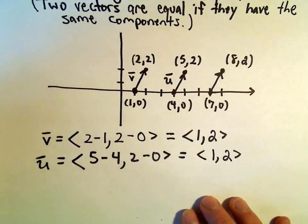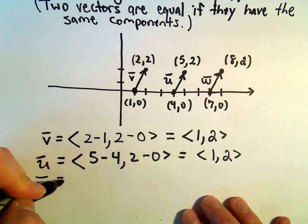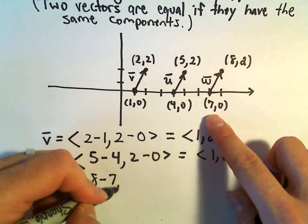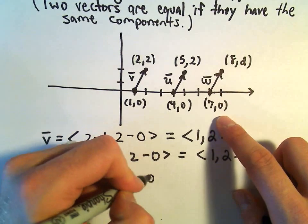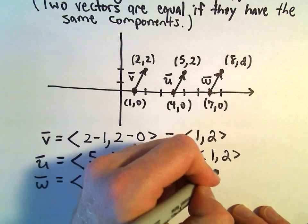I'll call the last one vector w. So vector w, I would take 8 minus 7, and then we would do 2 minus 0. Again, that vector would have components of 1 and 2.